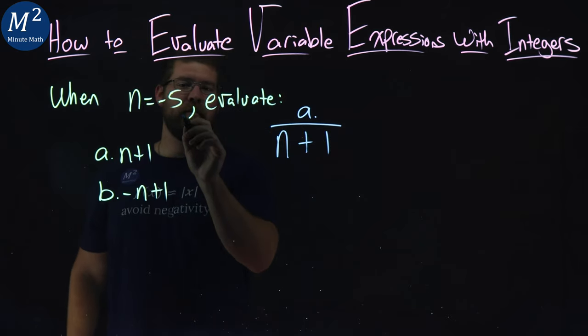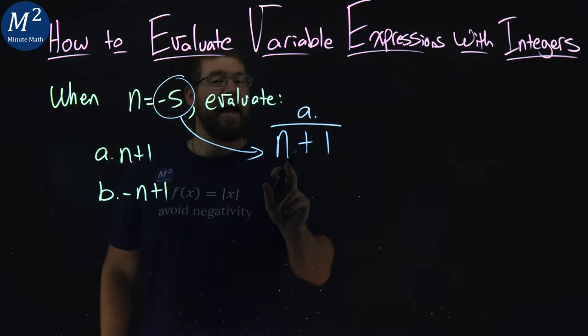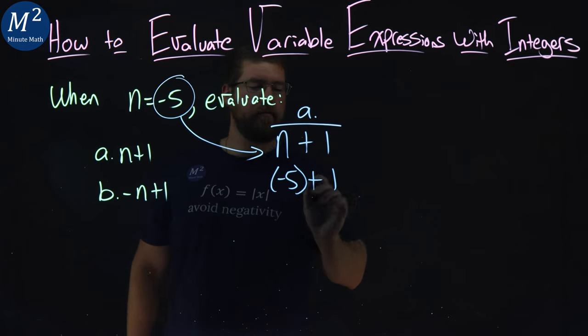From there, we're going to take this negative 5 and plug it in for n. So we have negative 5 here plus 1.